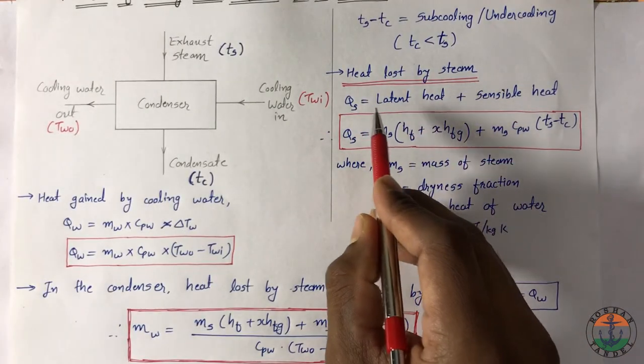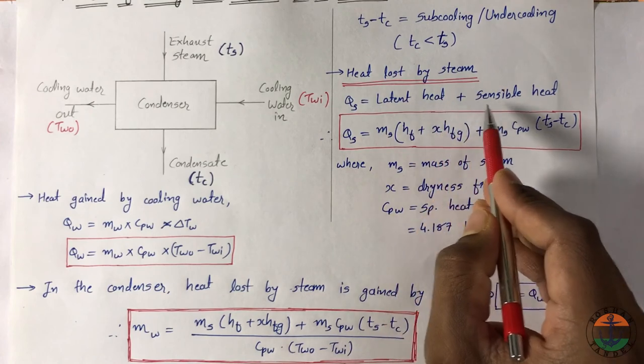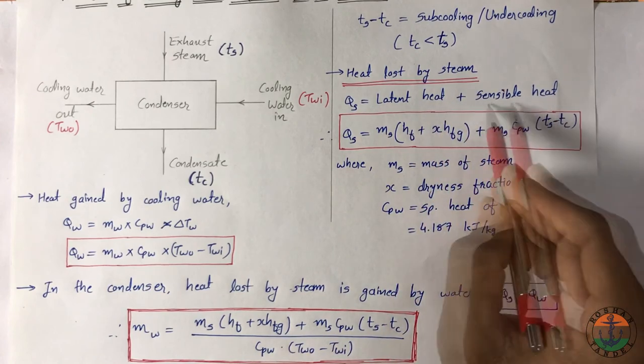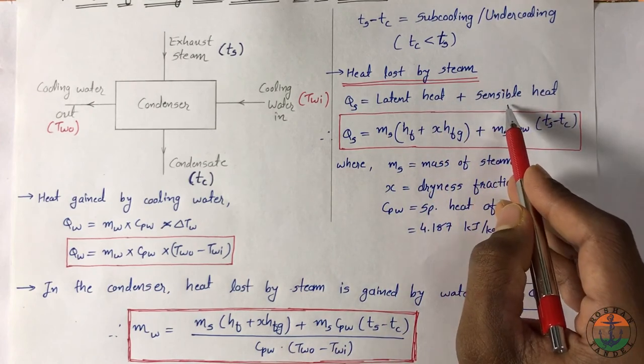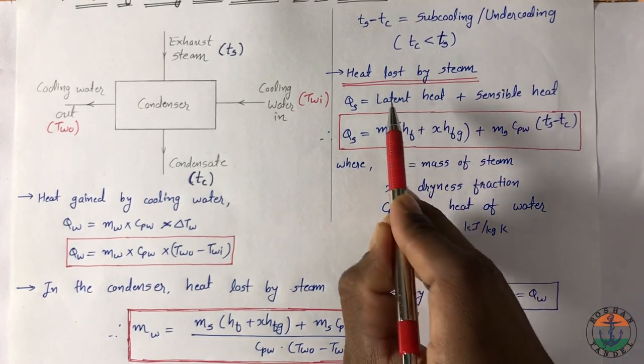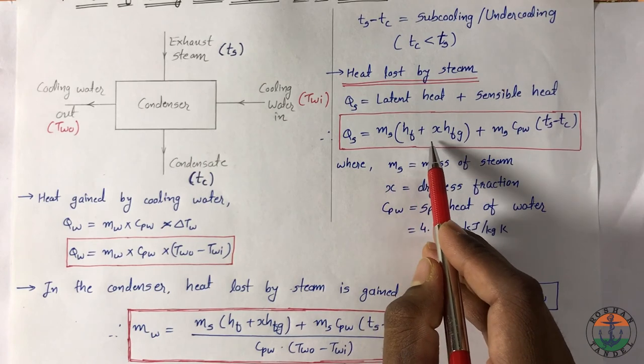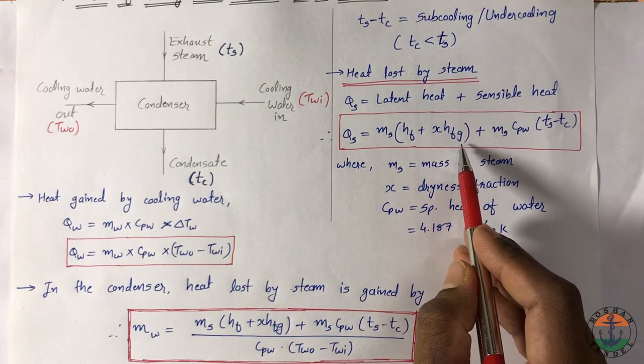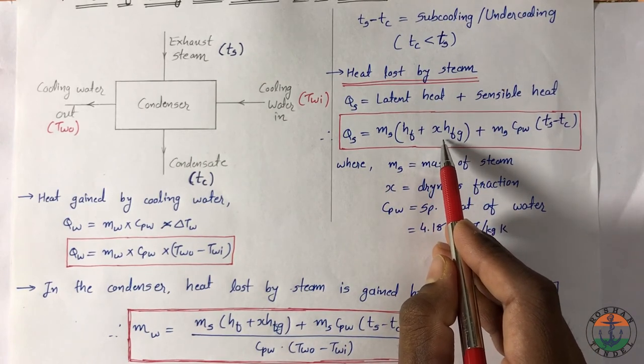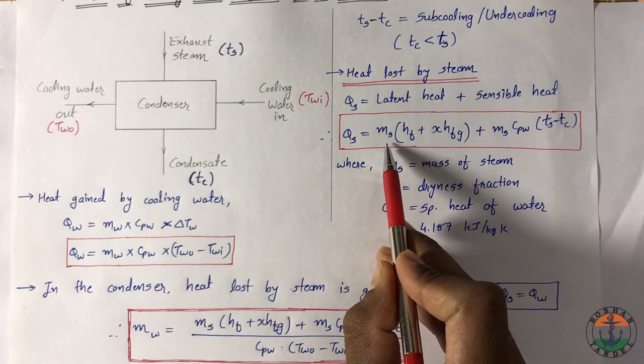Heat lost by steam is calculated as latent heat plus sensible heat. This sensible heat you have to consider in case of subcooling. So latent heat is calculated by mass of steam into HF plus X into HFG. X is the dryness fraction and MS is the mass of steam.